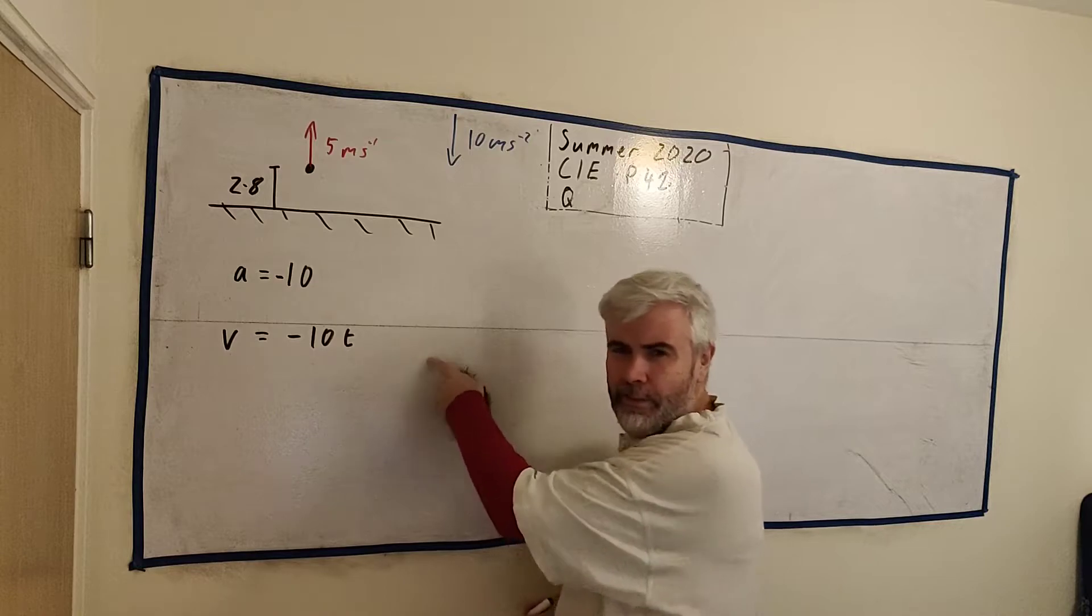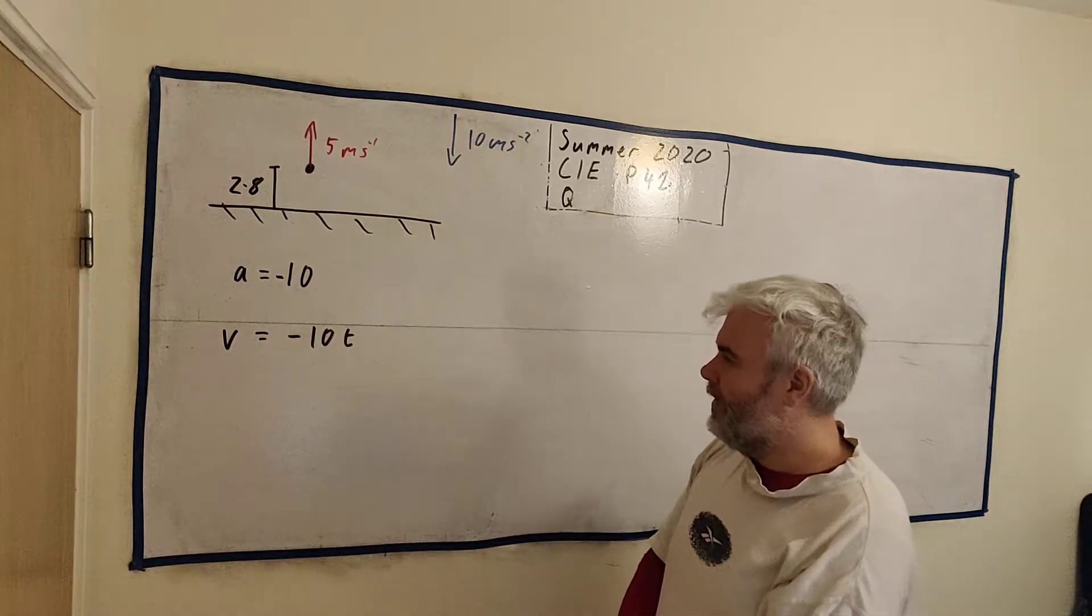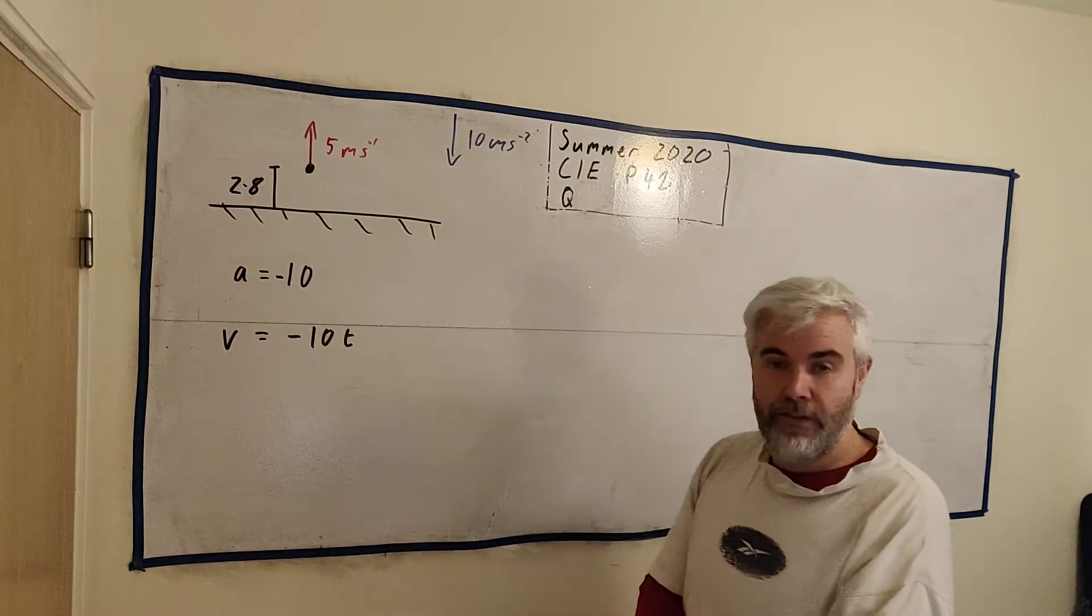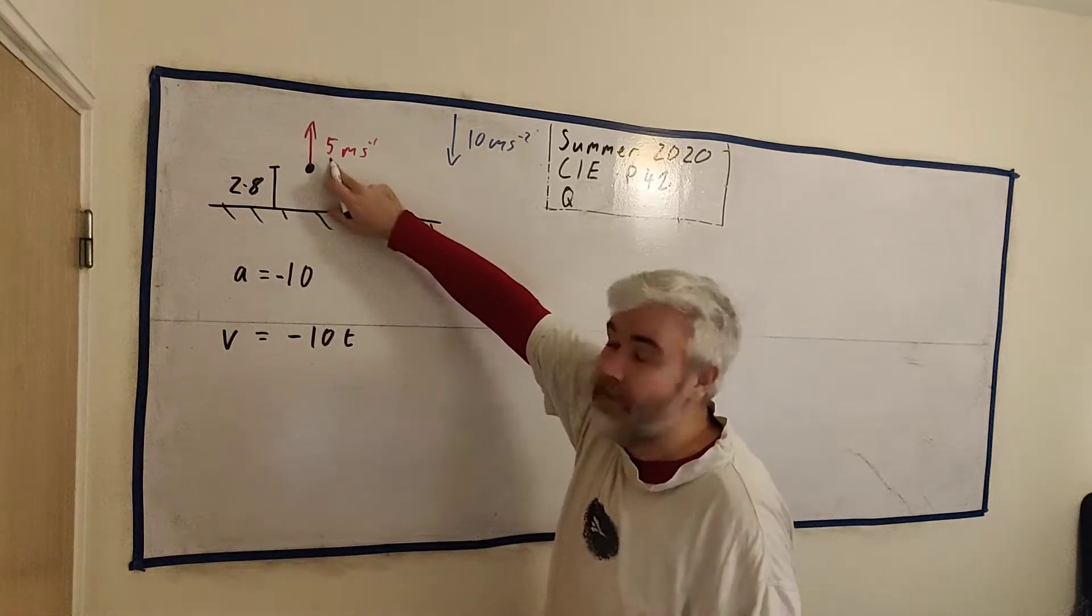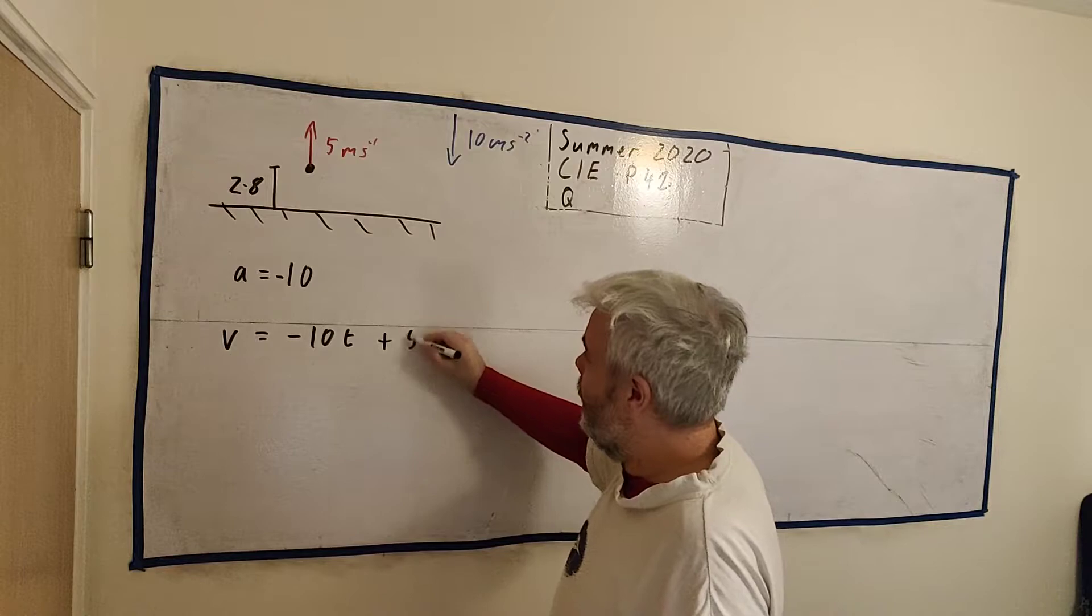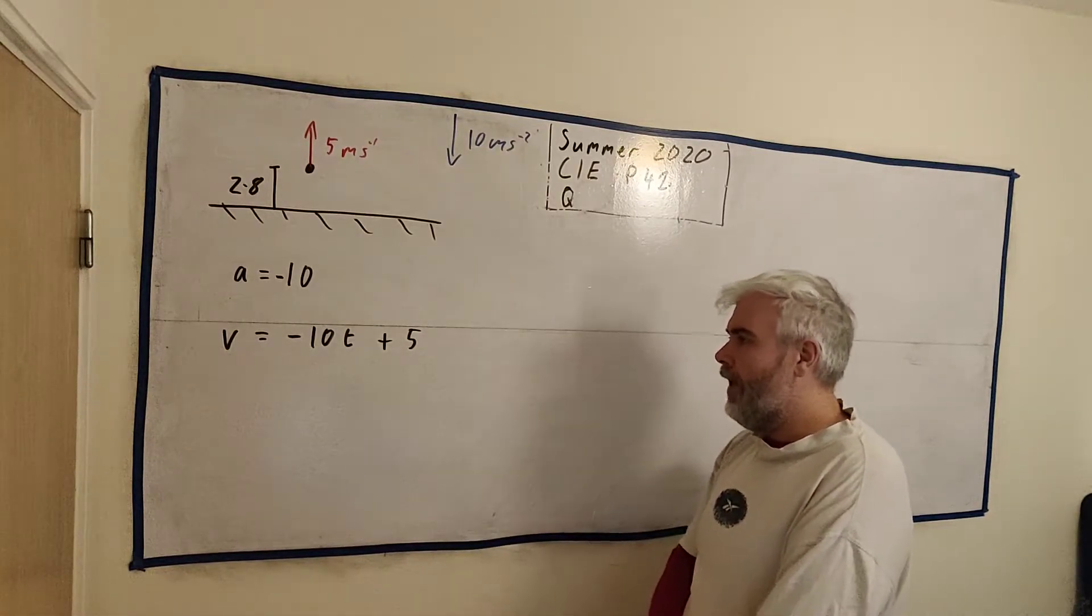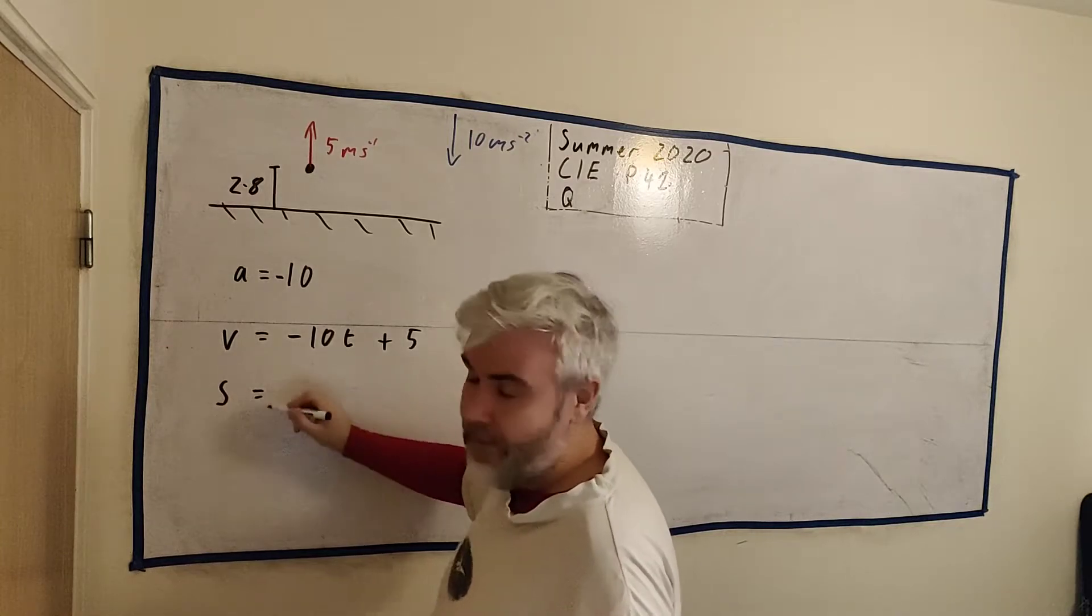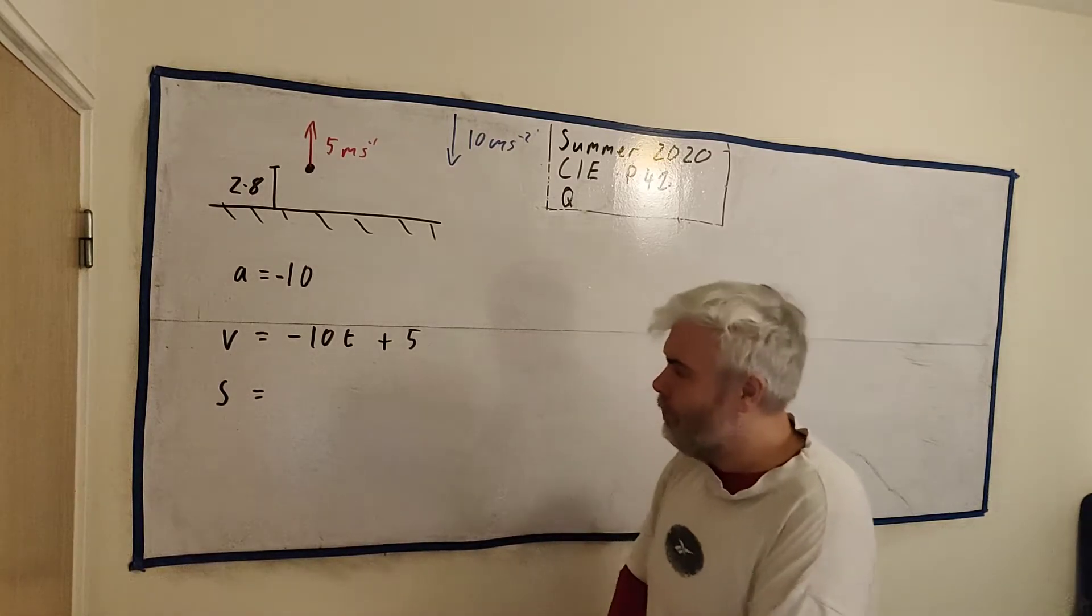The constant is just the initial state of the system. In this case they tell us the initial state is 5. So we integrate this again to get the displacement, how much has moved.